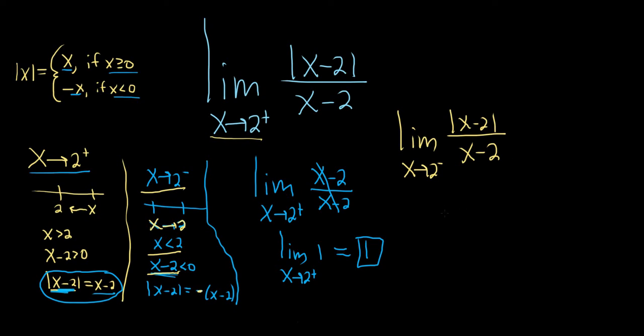Because it's approaching from the left. So this is equal to the limit as x approaches 2 from the left. And this is minus x minus 2 over x minus 2. These cancel. So this is the limit as x approaches 2 from the left of negative 1, which would just be negative 1. So that would be the answer if it was a minus.